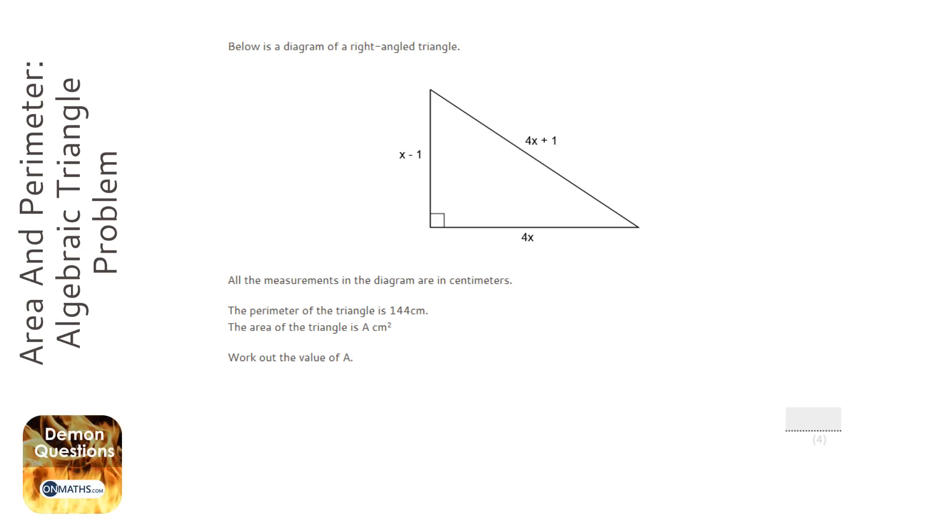What you need to do is find out what the perimeter for this triangle is in algebra, find out what it is as a number, and just get those equal to each other. This will make sense as we go on.